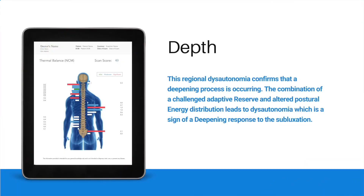D stands for Depth. As the subluxation becomes persistent, it affects the regulatory capacity of the end organs and glands. This shift away from the normal can be measured using the neurothermal instrument. The data from this exam identifies the depth of change in a person's health related to the impact of stress on regulation. The clinical term associated with this process is dysautonomia. The third assessment which completes the RED sequence is a neurothermal scan. At each spinal level there is the potential for the vertebral subluxation to impact the autonomic portion of the spinal nerve. This regional dysautonomia confirms that a deepening process is occurring. The combination of a challenged adaptive reserve and altered postural energy distribution leads to dysautonomia, which is a sign of a deepening response to the subluxation.